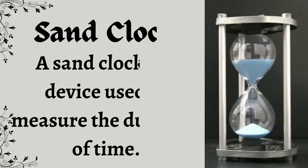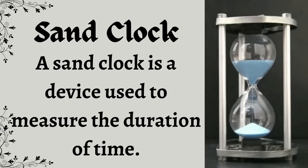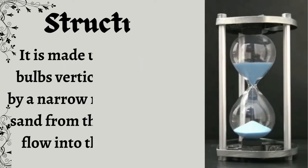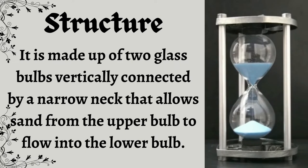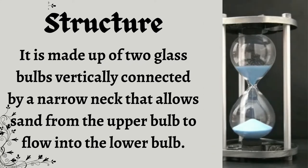As you all know, a sand clock is also known as an hourglass. It is a device used to measure the duration of time. It is made up of two glass bulbs vertically connected by a narrow neck that allows sand from the upper bulb to flow into the lower bulb.